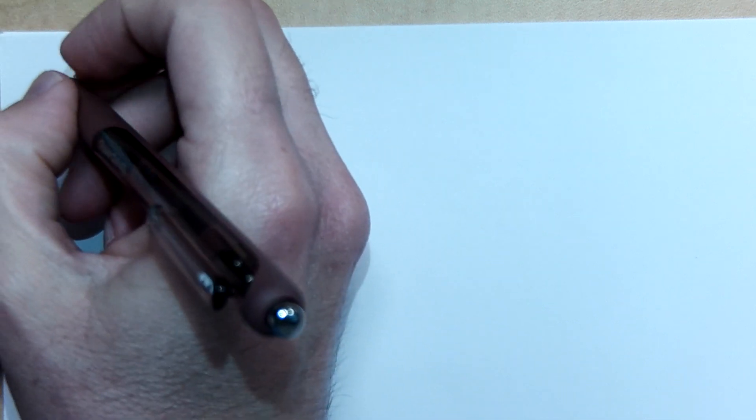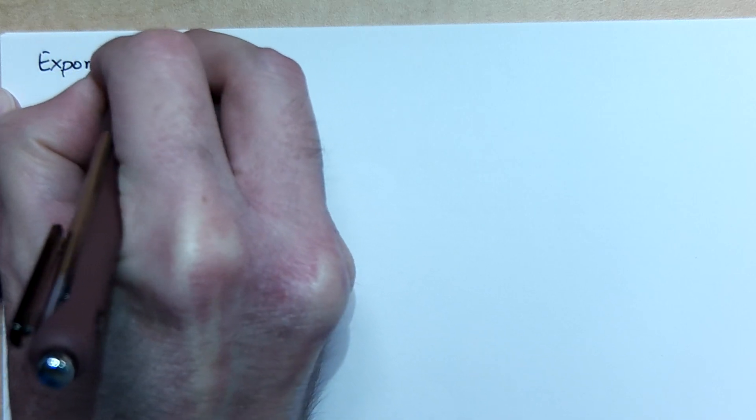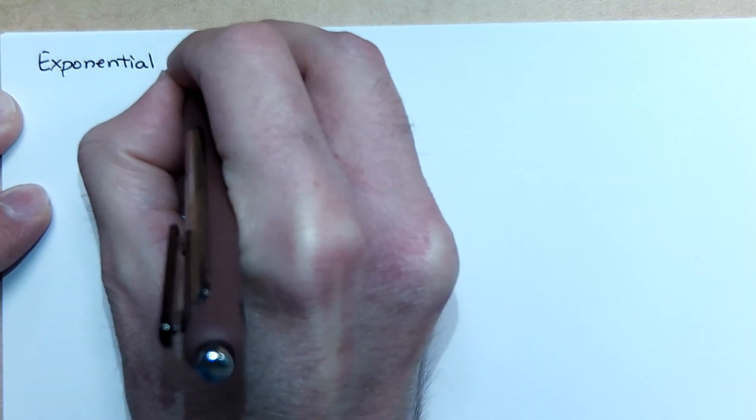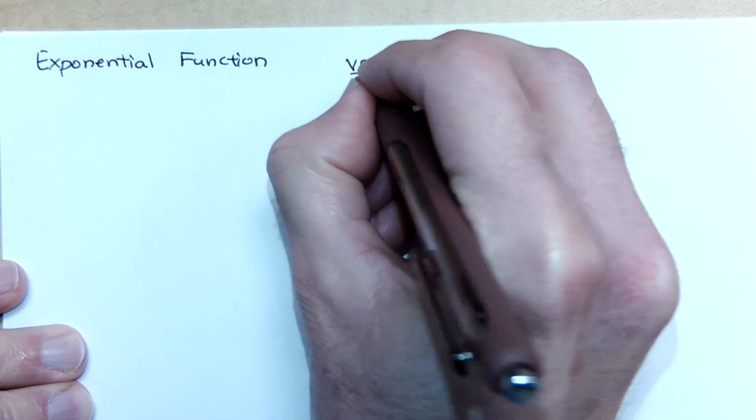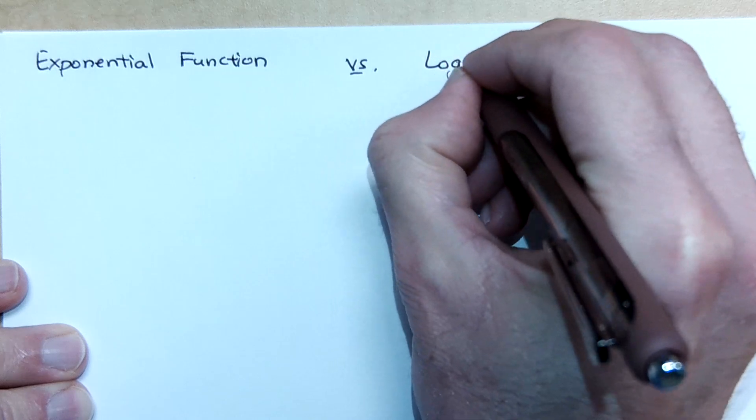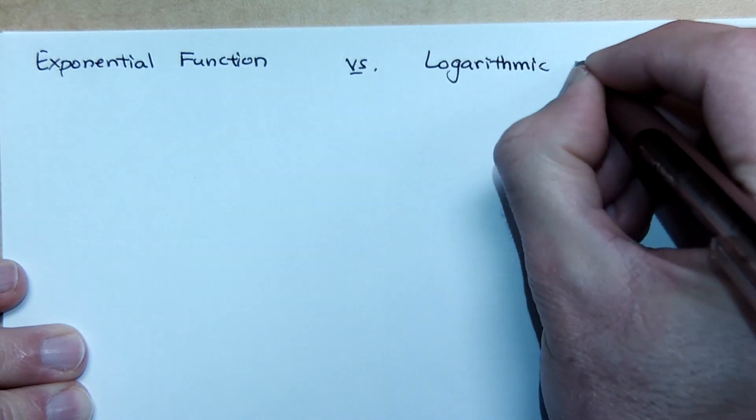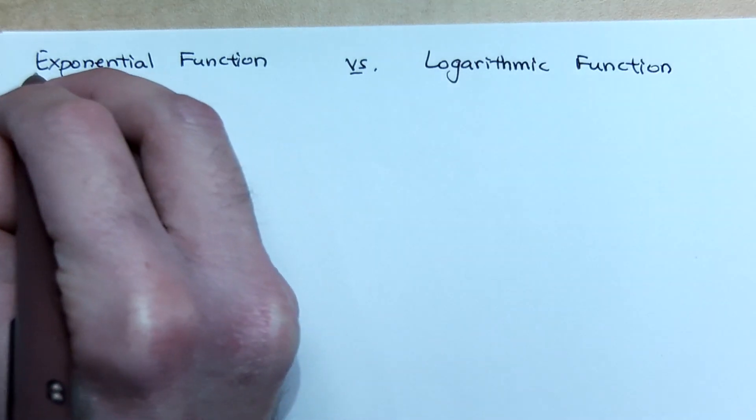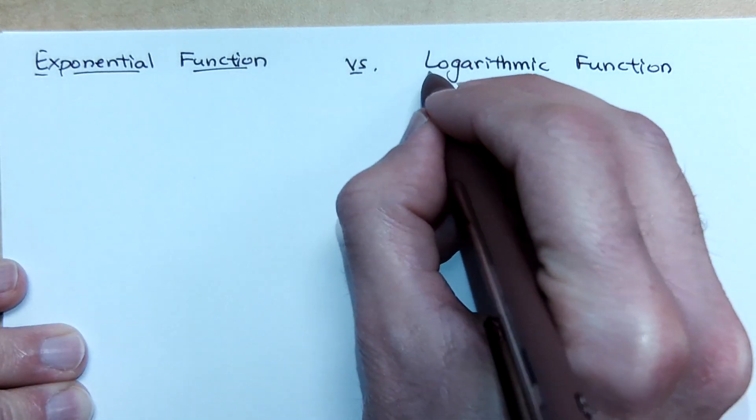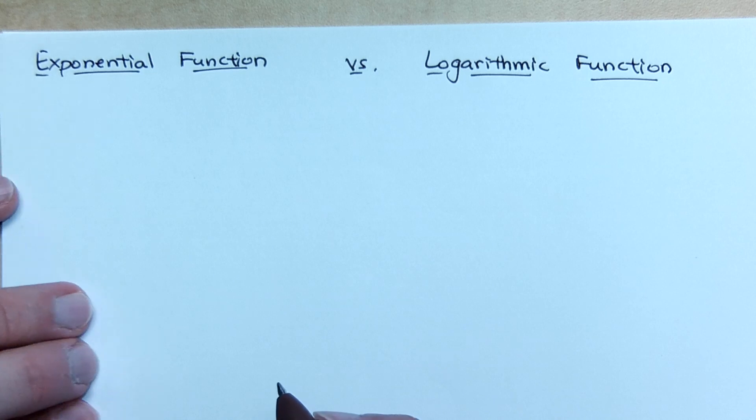So let's do just a big information dump for you. Our exponential function, we're going to compare this to our logarithmic function. We just got done saying on the previous page, in the previous video, that these guys were inverses of each other. So I want us to talk about what those differences are going to be, and what the similarities are.